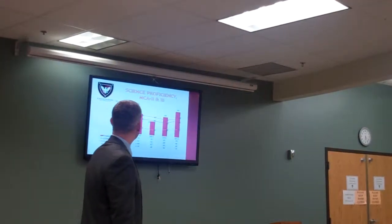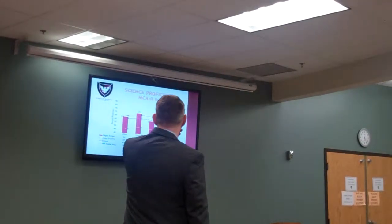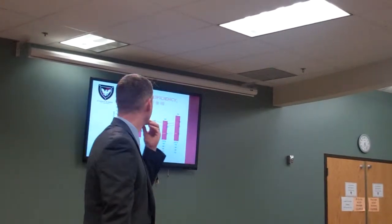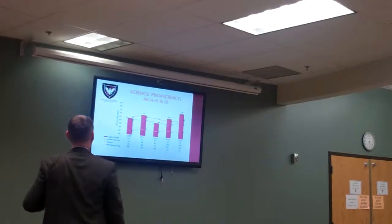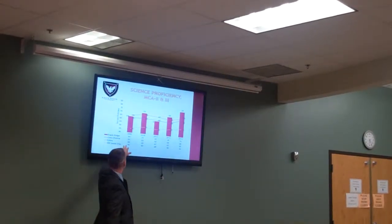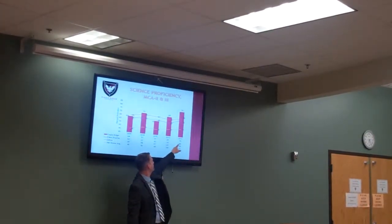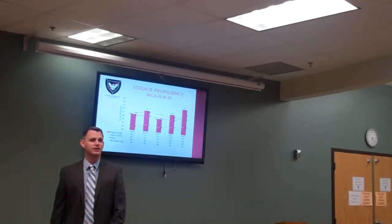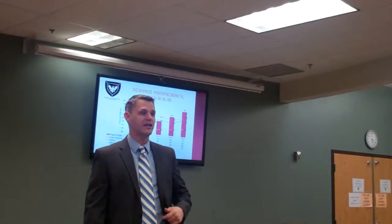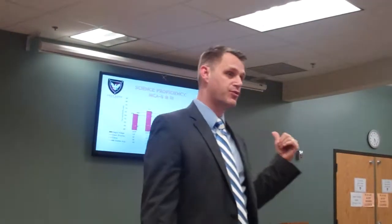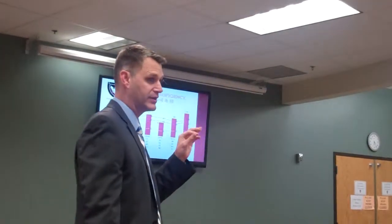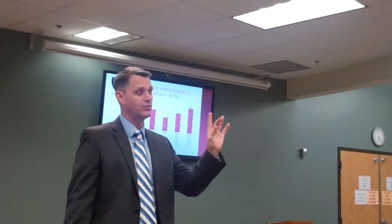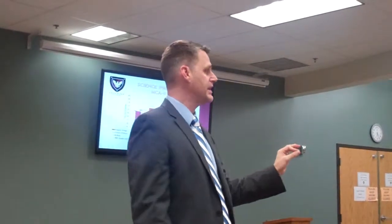Let's look at science. Look at the science growth from last year to this year. We went from 64 to 71 to 79% last year — ten points. That is number two or three in the state, depending on how you look at it. So between math at number one, reading at number four, and science at number two or three, we have the number one composite scores in the state.